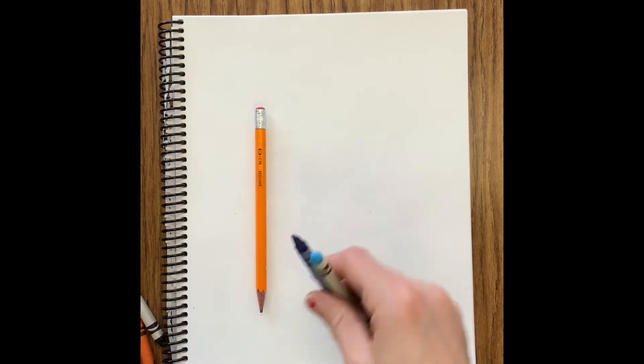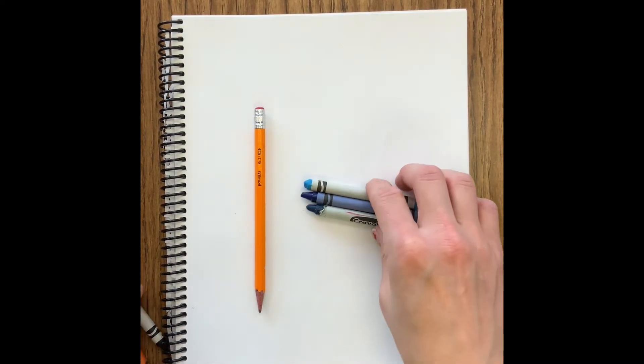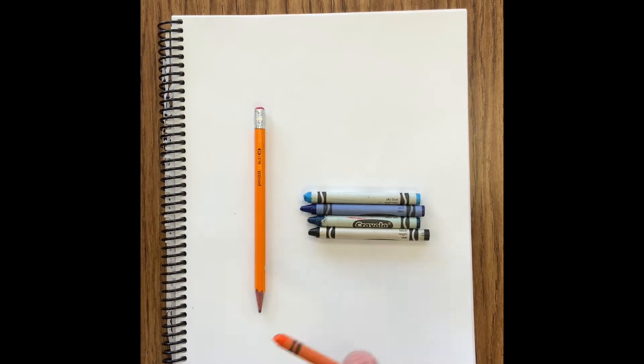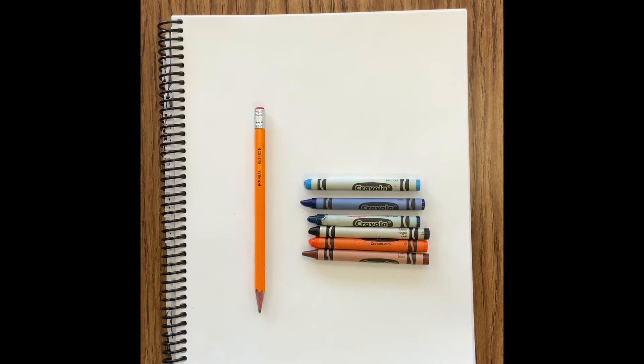For today's lesson you are going to need a pencil and crayons or colored pencils. We are going to try to make a snowman look 3D, so that might affect the colors that you choose.